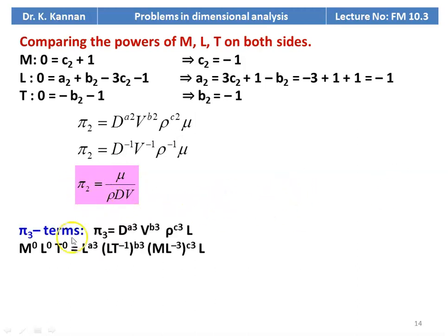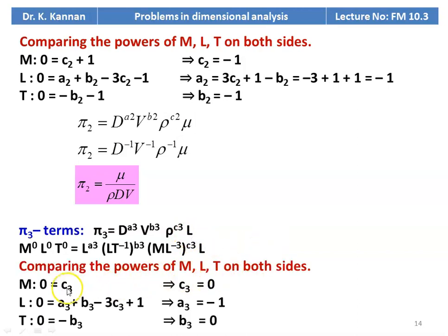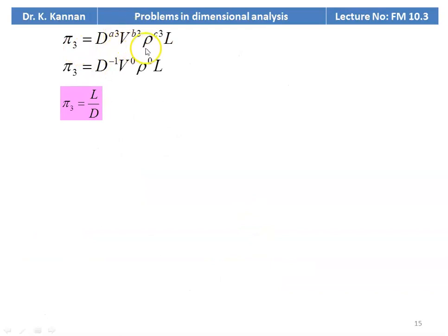For pi3 = D^a3 · V^b3 · rho^c3 · L: M⁰L⁰T⁰ = L^a3 · (LT⁻¹)^b3 · (ML⁻³)^c3 · L. Comparing powers: for M, c3 = 0; for T, b3 = 0; for L, 0 = a3 + b3 − 3c3 + 1 = a3 + 1, so a3 = −1. Therefore pi3 = D⁻¹ · V⁰ · rho⁰ · L = L/D.